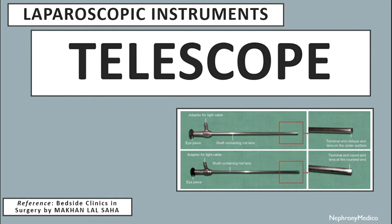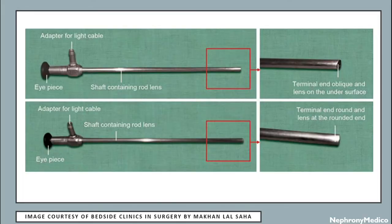Let's talk about the telescope, which is a laparoscopic instrument. This is a picture showing the telescope. It contains an adapter for light cable, an eyepiece, and a shaft containing rod lens, terminal lens, and oblique lens on the under surface.